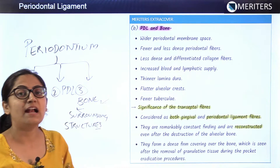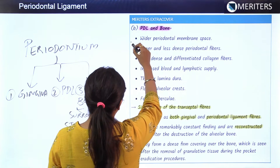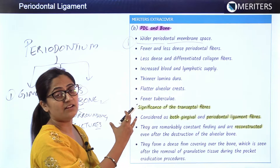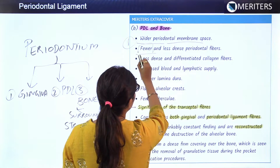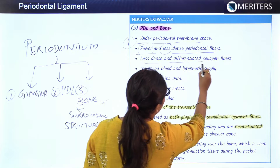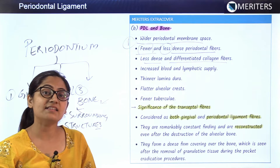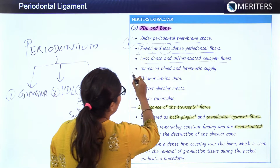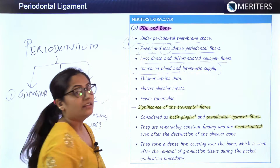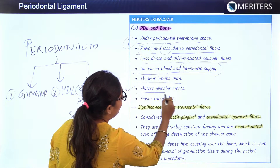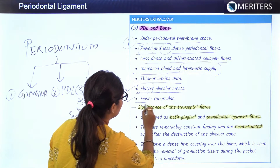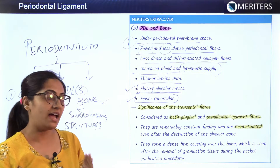Considering the periodontal ligament and bone in children, there are six important points. First, the periodontal membrane space is wider. Second, there are fewer and less dense periodontal fibers. Third, collagen fibers are less dense and less differentiated. Fourth, due to increased vascular supply they are more red. Fifth, they have thinner lamina dura. Sixth, they have flatter alveolar crests and fewer trabeculae.